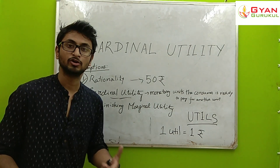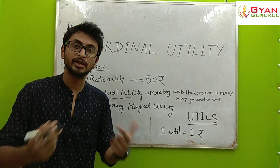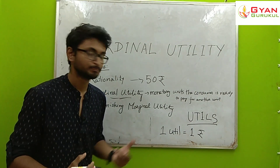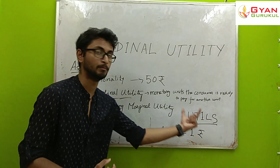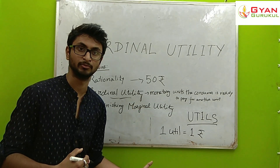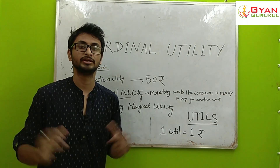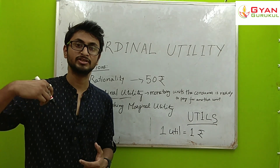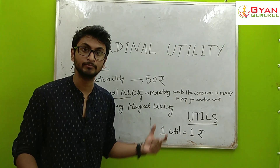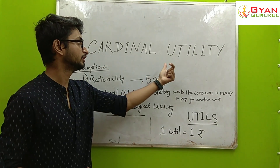What happens with additional or extra consumption? The extra utility derived from consuming one more unit is called Marginal Utility. As a consumer consumes more units of a commodity, the marginal utility from each additional unit decreases. For example, when I was hungry and got food for the first time, I derived much higher utility. With each subsequent unit, I derive less utility. This is the concept of Diminishing Marginal Utility, which is the core concept of Cardinal Utility analysis.